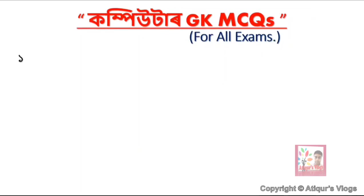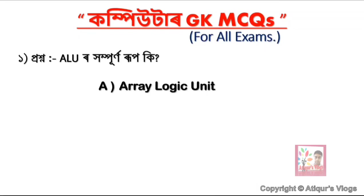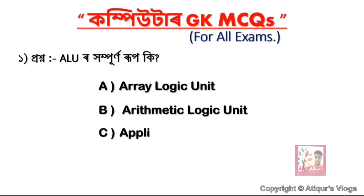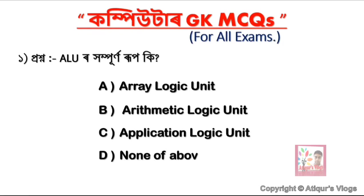The first question is: ALU — what is the full form? Option A is Array Logic Unit, option B is Arithmetic Logic Unit, option C is Application Logic Unit, and option D is None of the Above. The correct answer is option B: Arithmetic Logic Unit.